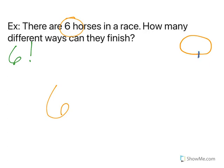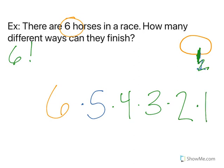Okay, great. So the horse crosses. How many horses are left to finish second? Well, five, because one of them has crossed the finish line. Great. Then the next horse crosses. So we got second place. Now there are four left for third place, three left for fourth place, two left for fifth place, and then that poor last horse comes in last.